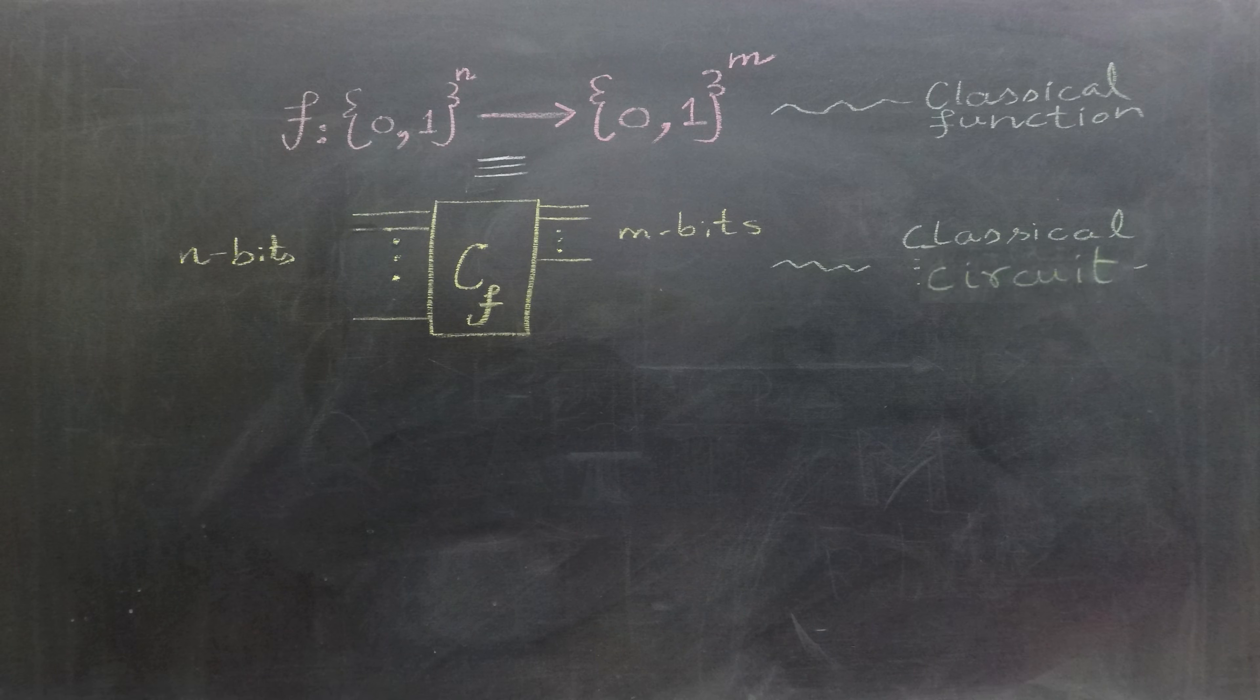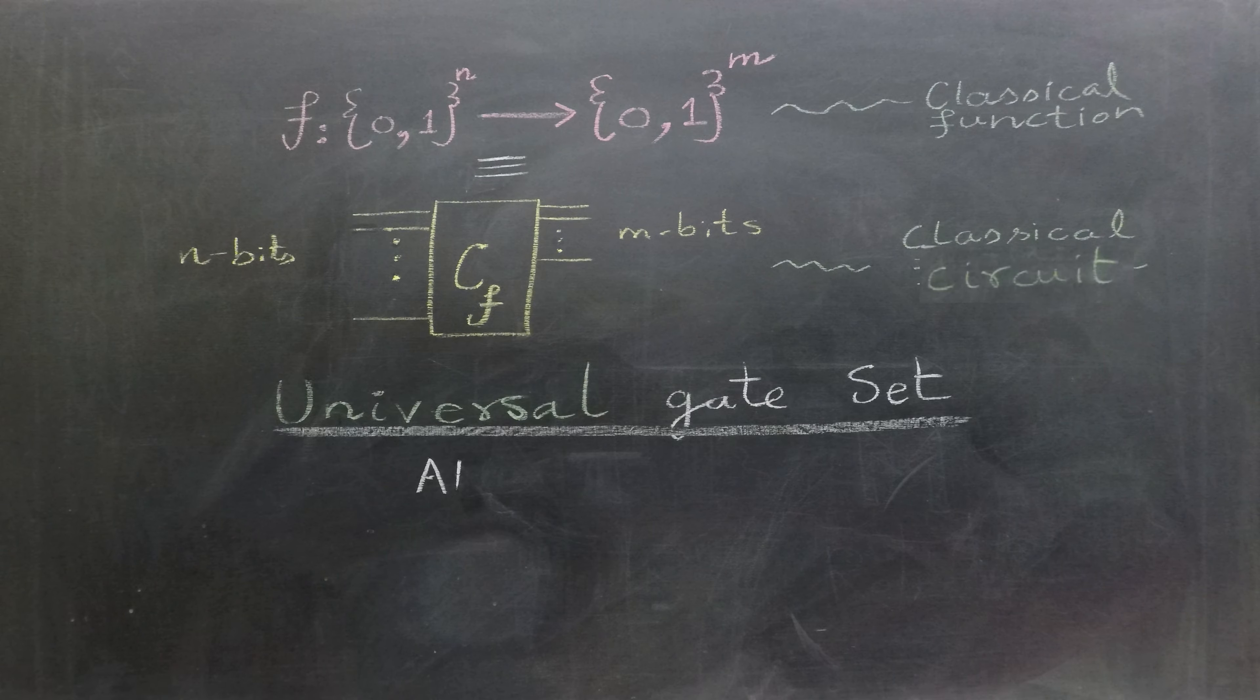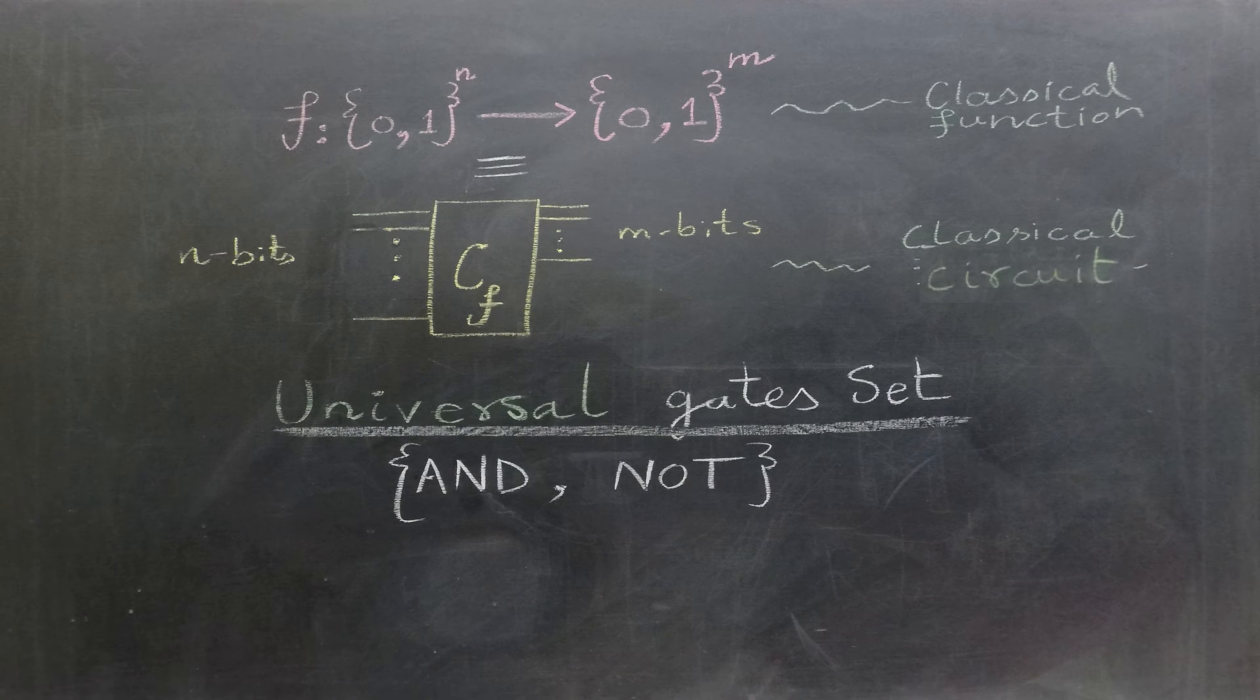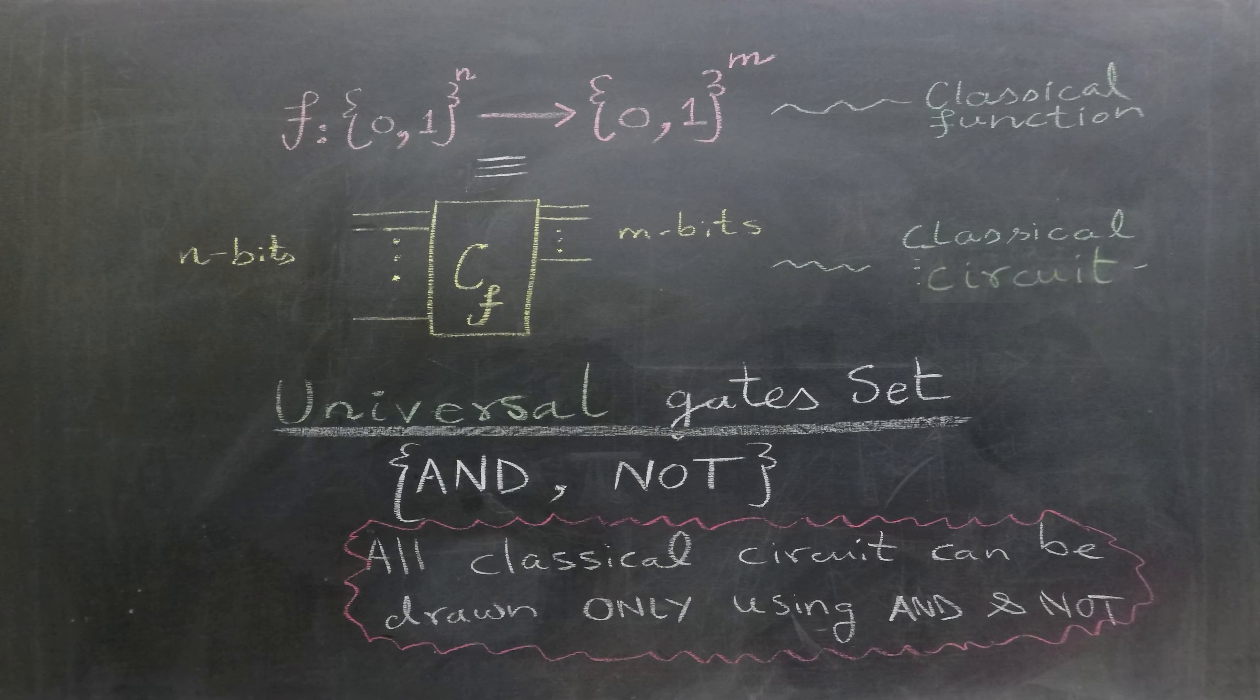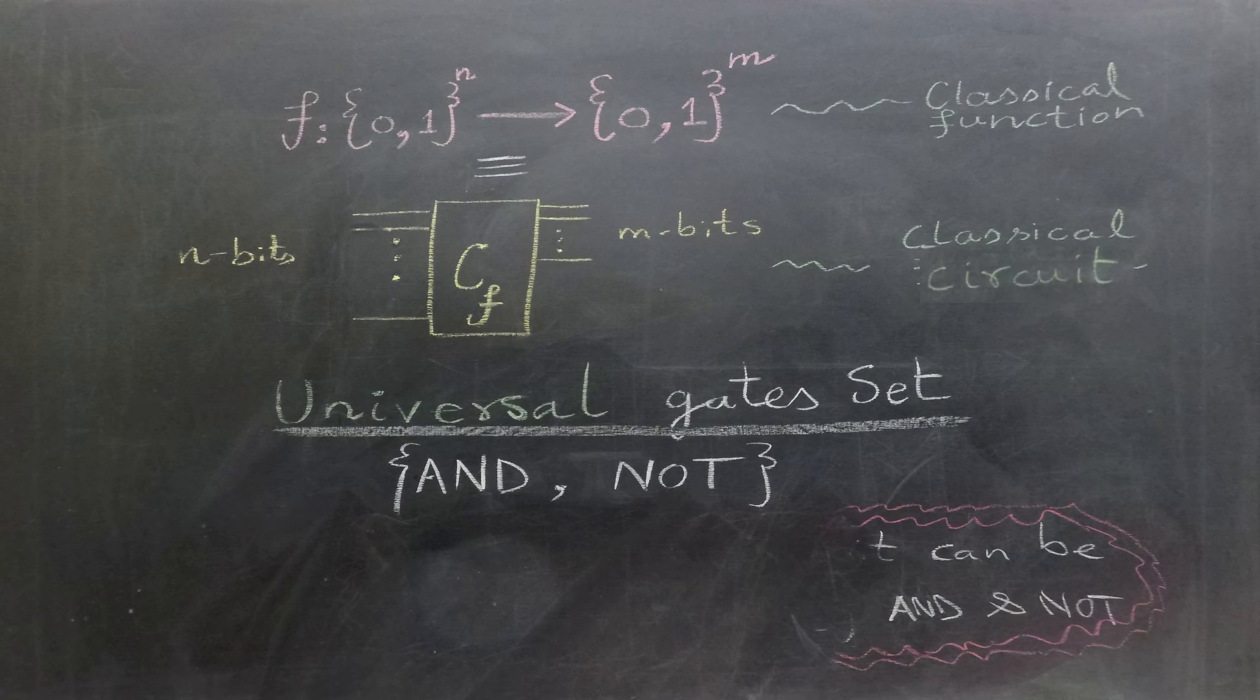To address this challenge, let's explore a universal set of classical gates that includes AND and NOT gates. The universal set is termed universal because it allows us to construct any classical circuit using only these two types of gates.